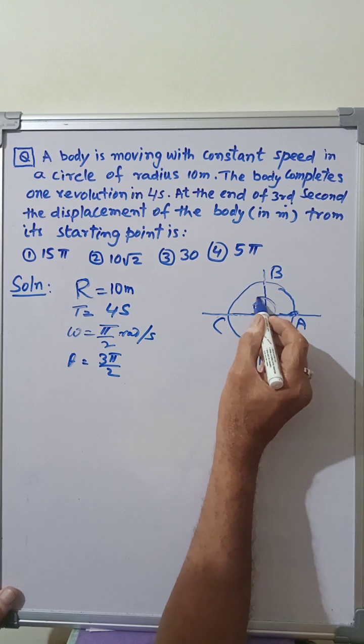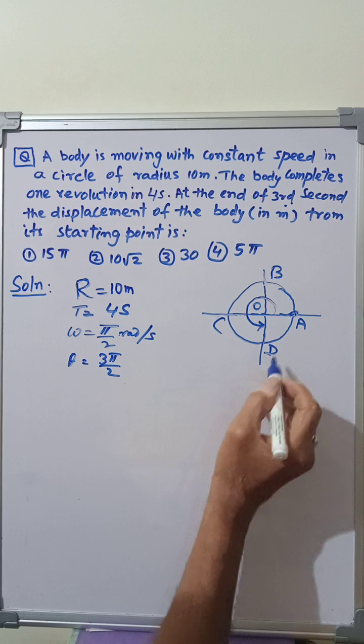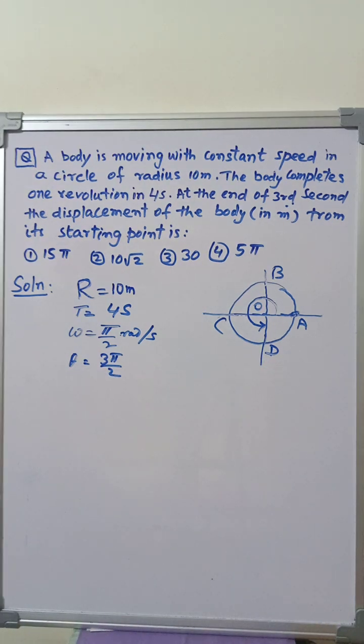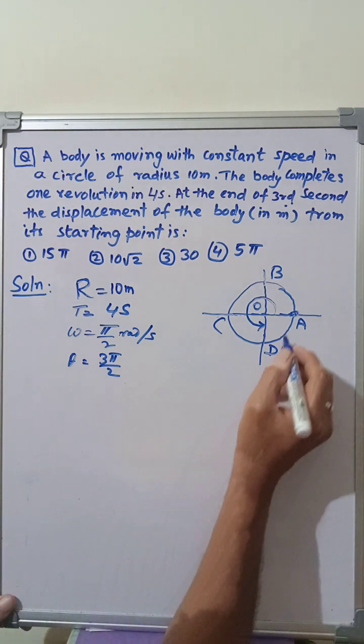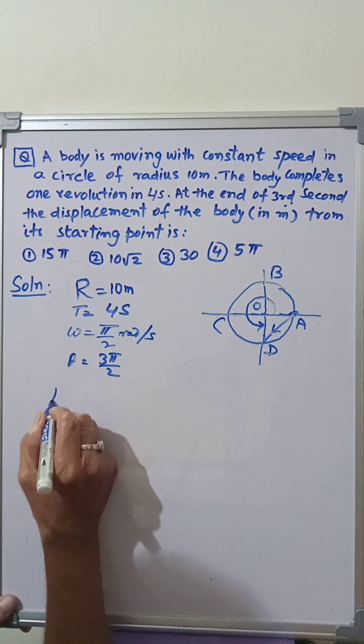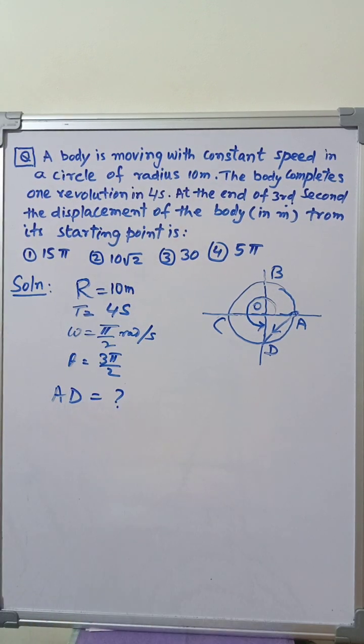So, the final position after 3 seconds will be here at position D. We are required to find the displacement AD. AD is equal to how much? This is what we want to find out.